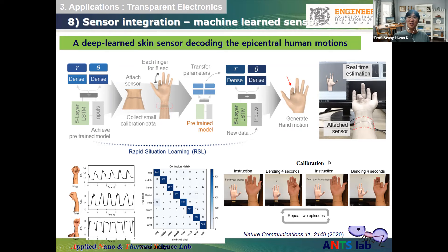Regarding whether signals differ between different people: yes, but using transfer learning, a very short calibration of just 3–5 seconds allows the learned data to be applied to other users through transfer learning.